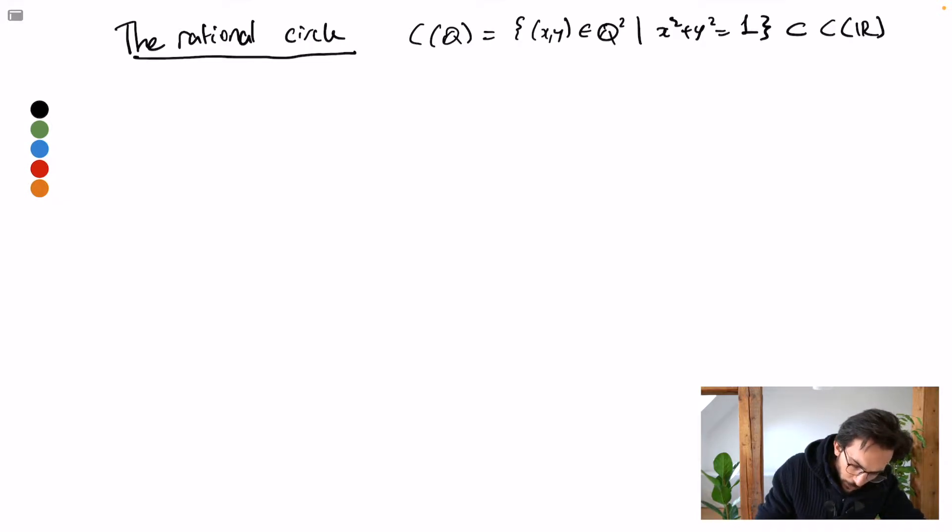So if you were to write rational numbers x and y as a over c and b over c. Of course, for any pair of rational numbers, I can do this by equating the denominators. And a, b, c are integers with the standard warnings that c should not be 0. And I would like the greatest common divisor of a, b, c to be 1.